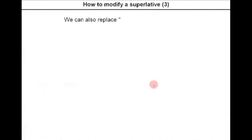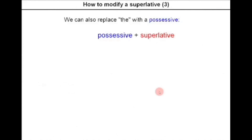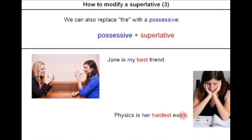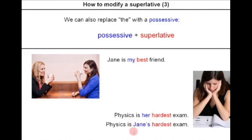We can also replace 'the' with a possessive — possessive plus superlative. For example: Jane is my best friend. Physics is her hardest exam. Here we can see possessive adjectives: my and her. Or we can say physics is Jane's hardest exam, using the person's name.